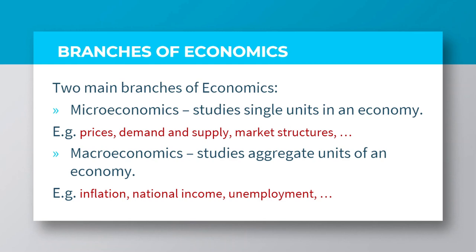There are two main branches of economics: microeconomics and macroeconomics. Microeconomics studies the single or individual unit in an economy. Examples are prices of goods and services, demand and supply, market structures, and consumer theory, where we try to look at utility concepts. Macroeconomics also studies the aggregate unit of an economy, and examples of issues in macroeconomics include inflation, national income, unemployment, and others.